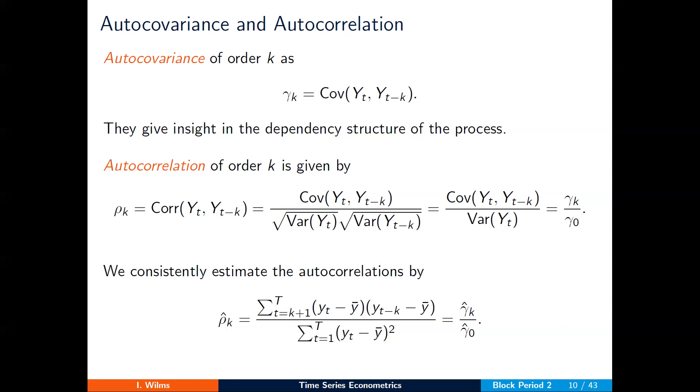Note that in this step, I make use of the second property of weak stationarity. Namely, that the second moment is constant over time. So the variance at time point t and at time point t minus k are the same, such that the denominator simplifies to the variance of yt.